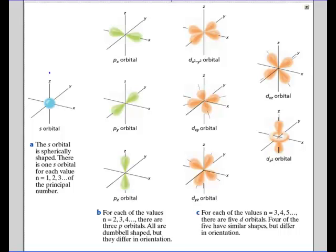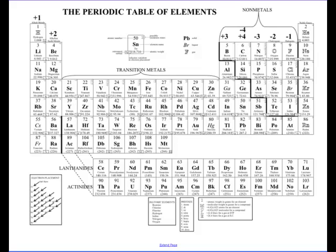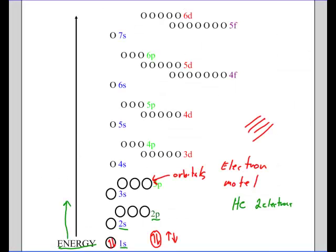What's the next element? After helium comes lithium, which has three electrons. The first two electrons fill the 1s, so where does that third electron go? The 1s is full, so it goes into the next available orbital — the 2s. It doesn't matter if you draw an up arrow or a down arrow first, but I typically draw an up arrow first.